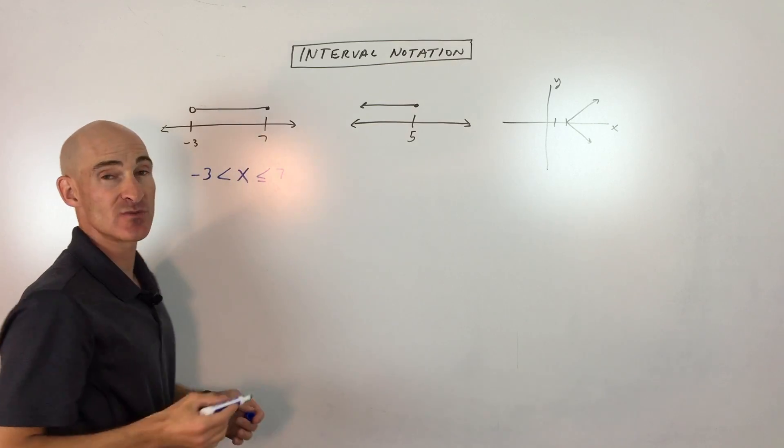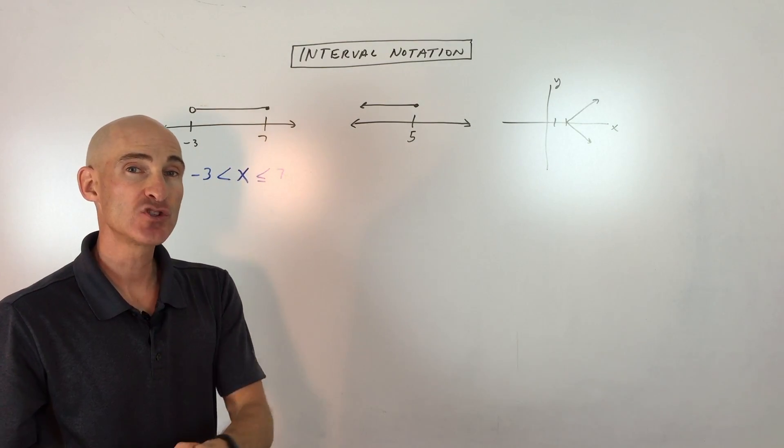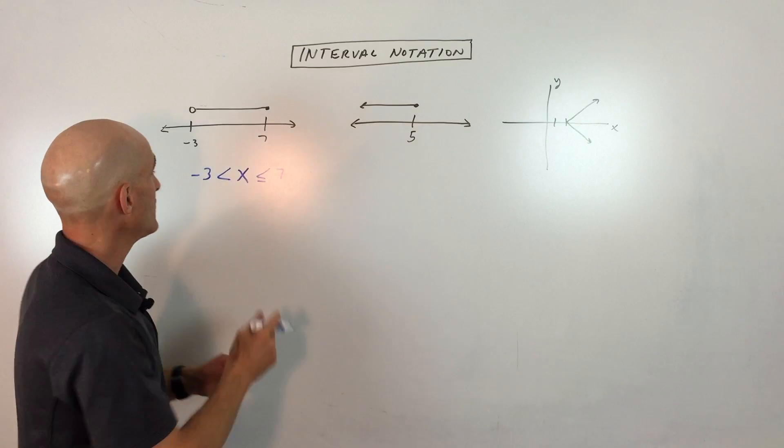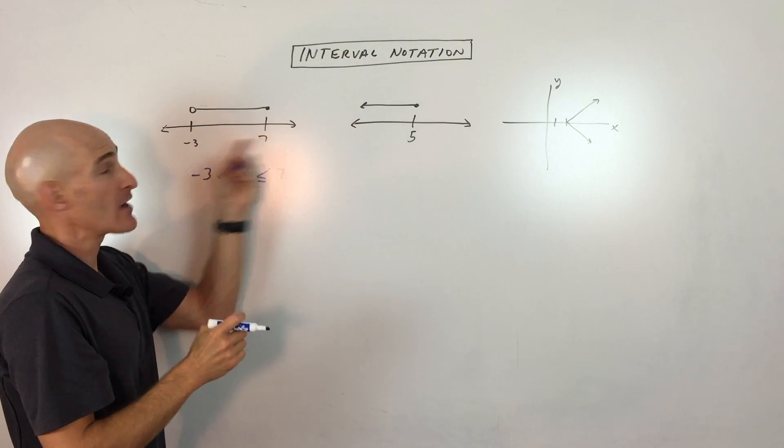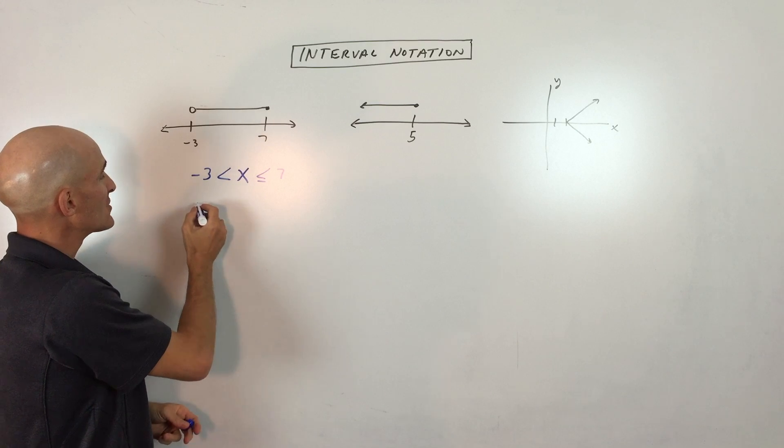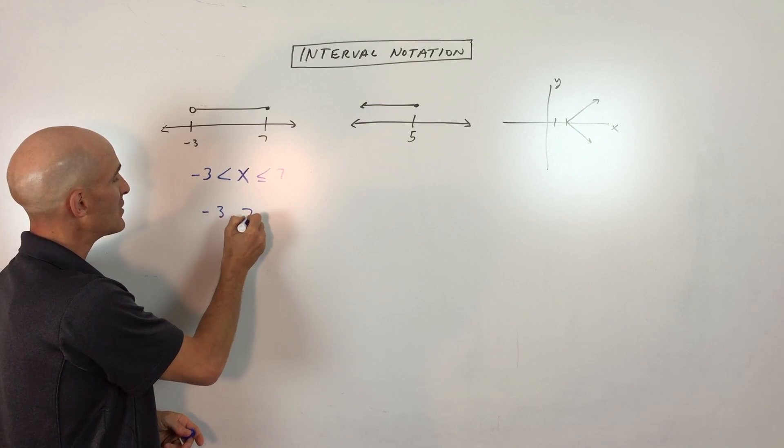You can see x is sandwiched in between the two values. Now when you switch to interval notation, you still think about the number line and working from left to right or from low to high. And so you can say, here's negative 3 and here's 7.